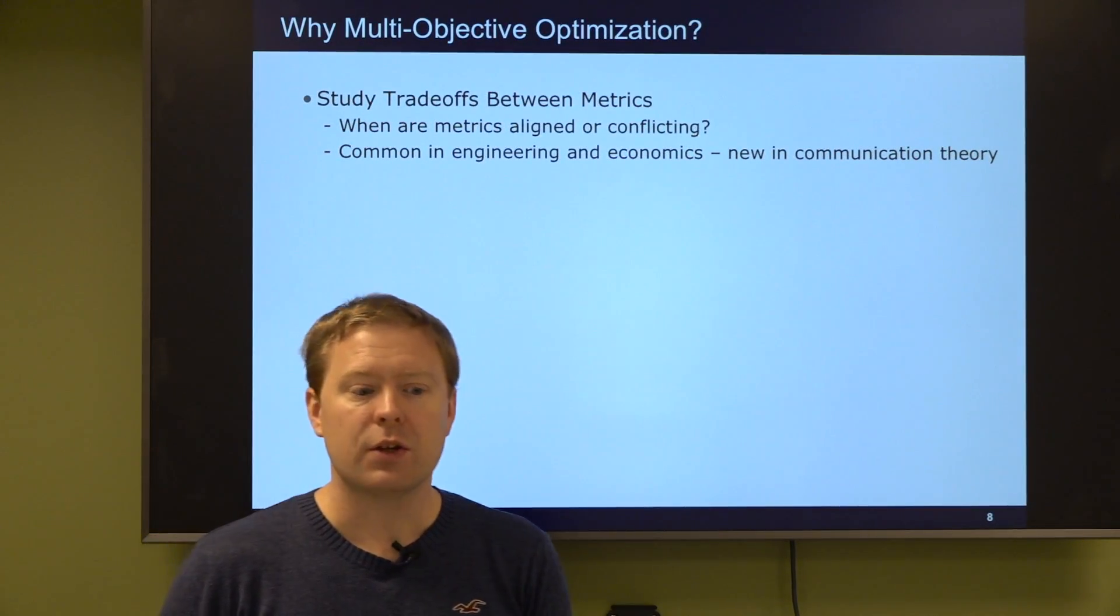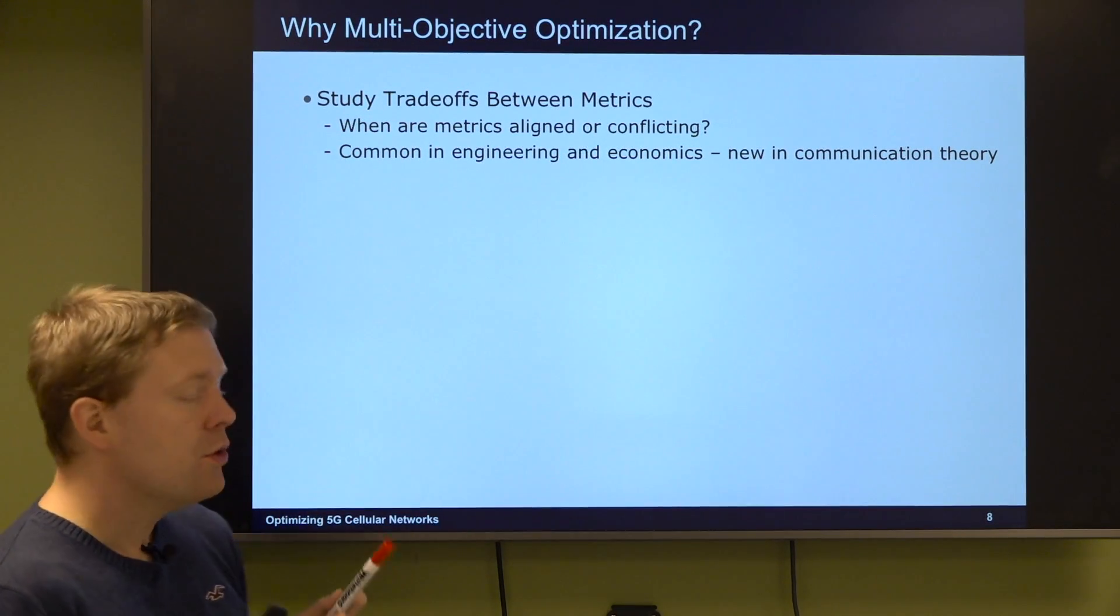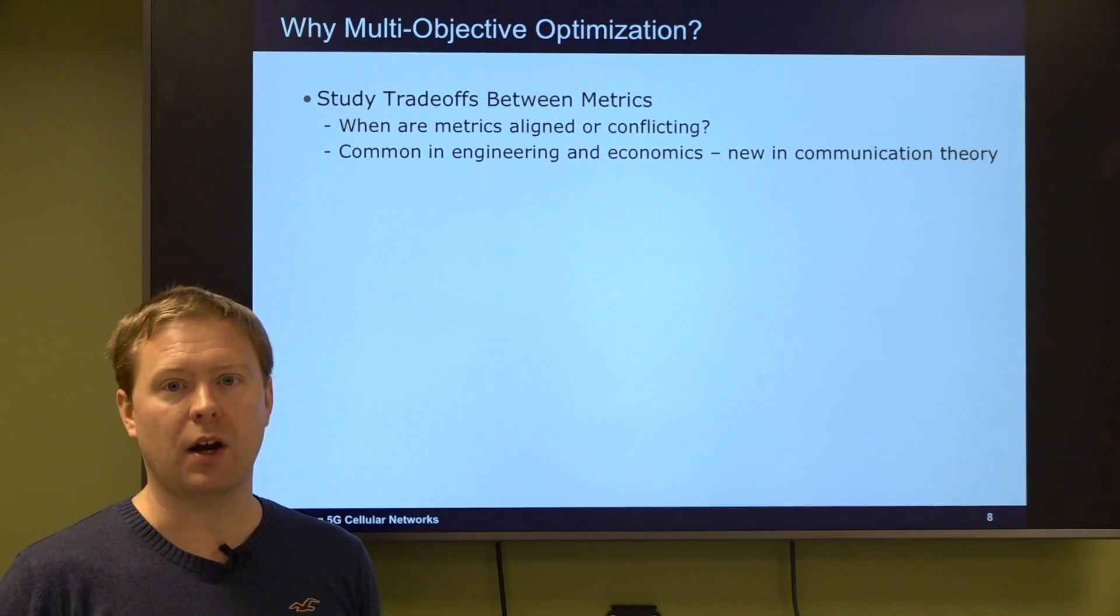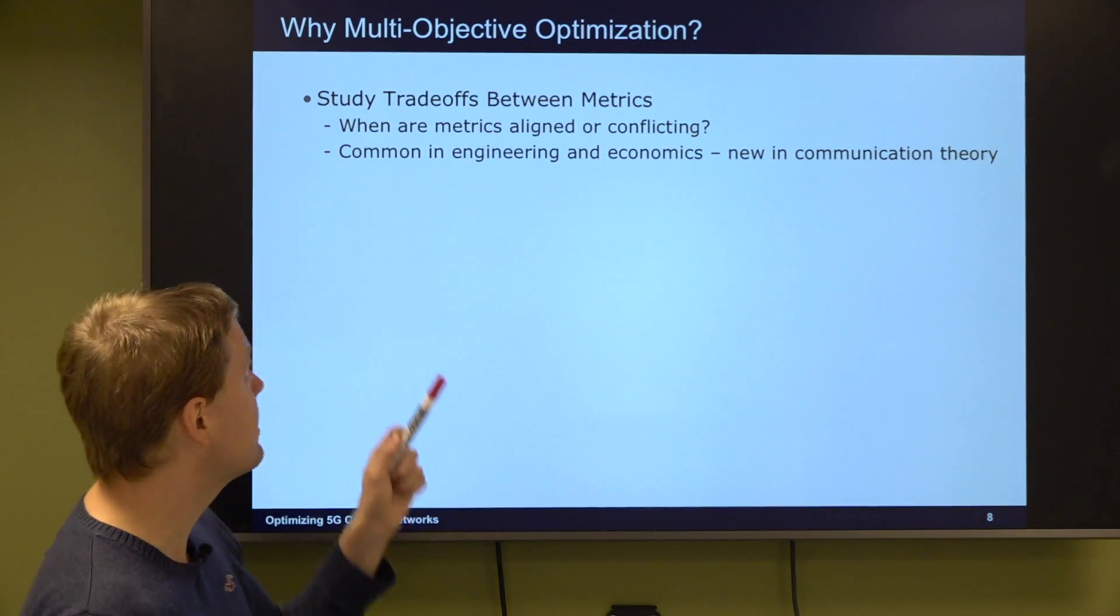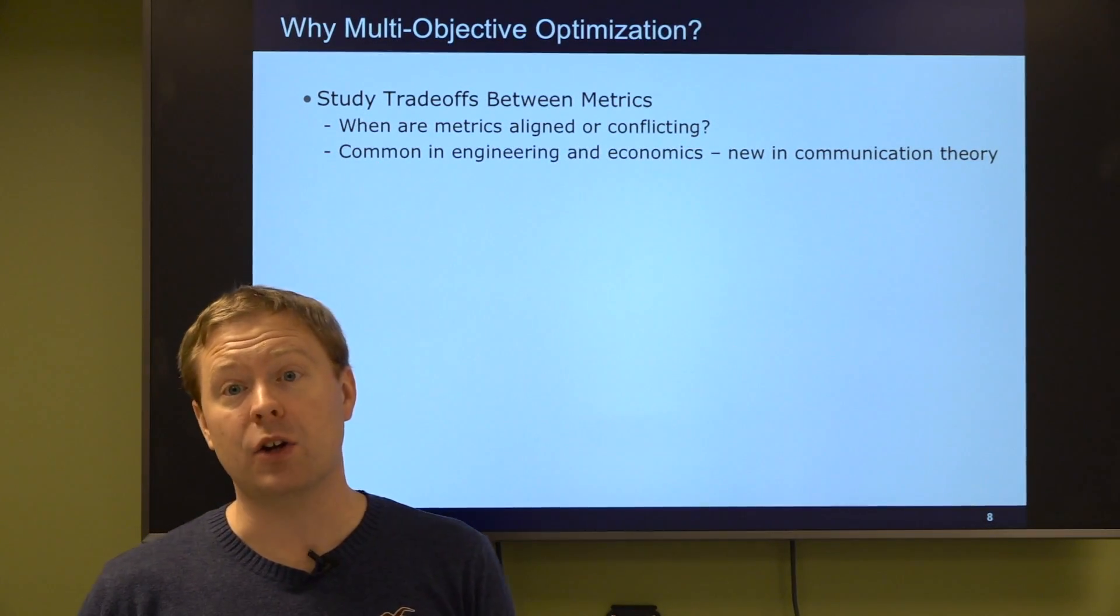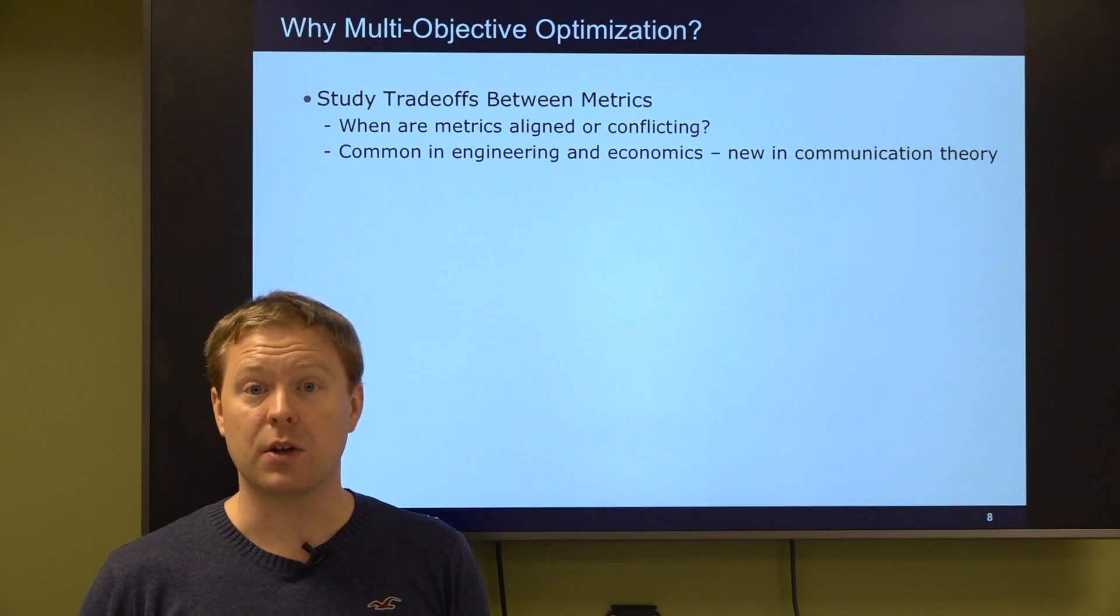So why should we consider multi-objective optimization? We want to understand which metrics that are conflicting and which ones that are aligned. We cannot know that before we actually start studying it. This is a common approach in certain engineering fields in economics to study trade-offs. It's rather new in communication theory.